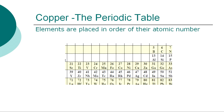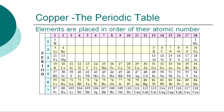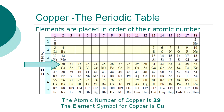The periodic table is a chart showing the symbols and the atomic numbers of all known elements, such as copper, in one large grid. The chemical elements of the periodic table are placed in order of their atomic numbers. Atomic numbers increase as you move across a row, called a group, or down a column, called a period. The atomic number of copper is 29 and the element symbol for copper is Cu.